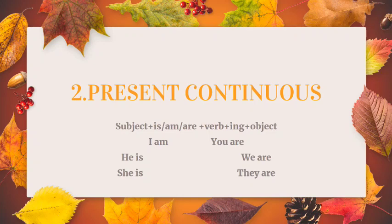Now let's look at the action and formula. The formula is: Subject + is/am/are, then the verb with -ing added, and then the object.